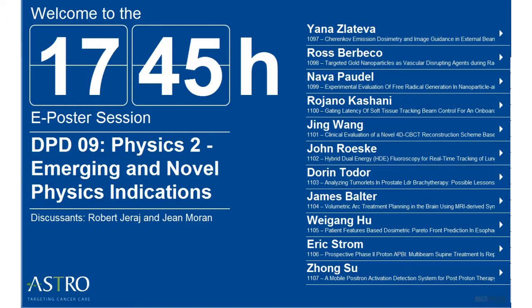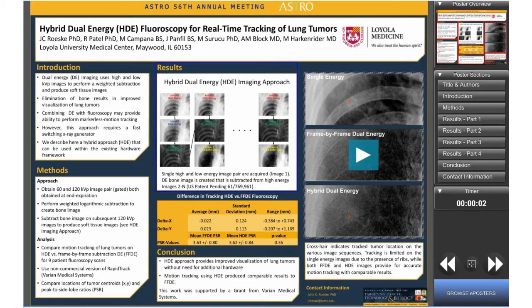ePoster sessions are a group of 10 to 12 abstracts chosen by the Annual Meeting Scientific Committee, most commonly grouped by track or topic.